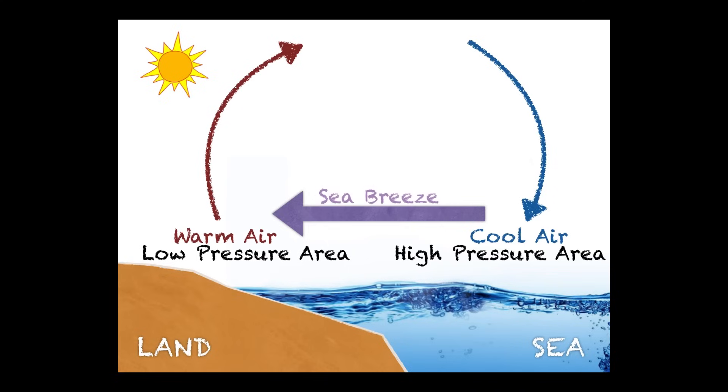We name it a sea breeze because the rule is you name a breeze or a wind by where it originated from, where it came from. In other words, where is the high pressure? In this case, because the high pressure is over the sea and the air is coming towards the land, we name it a sea breeze. And you can see the collection of all your previous instruction kind of pulling together into this picture. So there we have a sea breeze, but there's also such a thing as a land breeze.